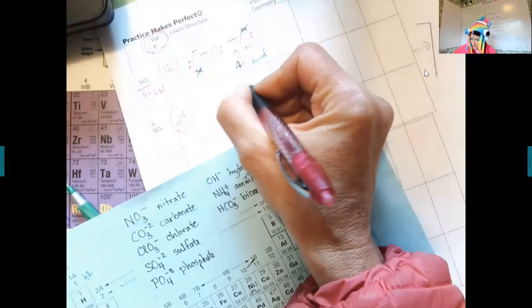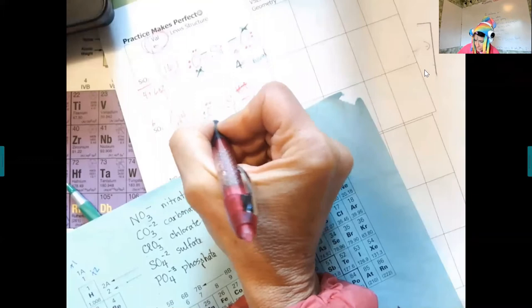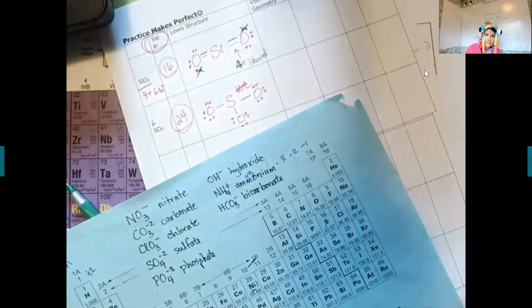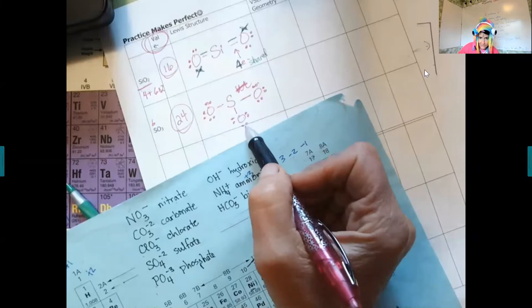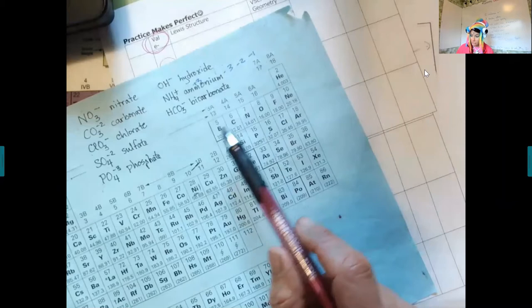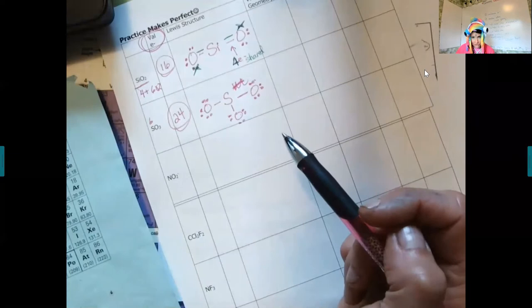I recommend you do your north-south-east-west grid. If you give your octet to the oxygens, you're at 24 because you have eight, eight, and eight. The sulfur has six, and the line counts as two for each side it's attached to, so sulfur has two, four, six. You don't want to say 'sulfur has six, we're good' because they're all not happy until they get to eight. You can't just add dots because you don't have any more, so you have to share.